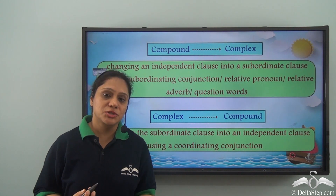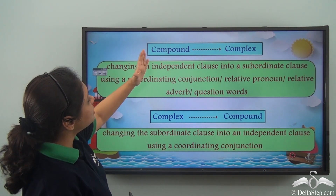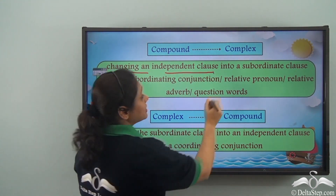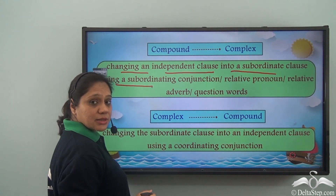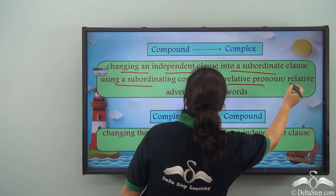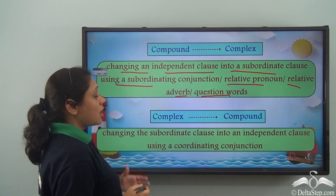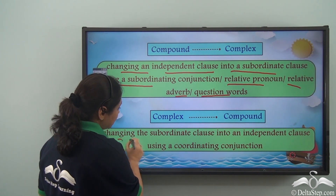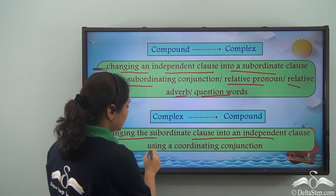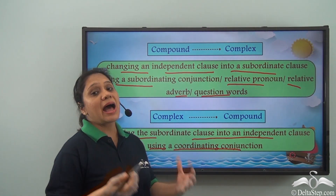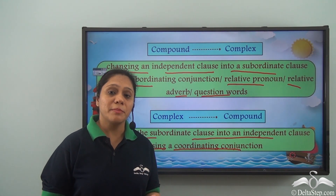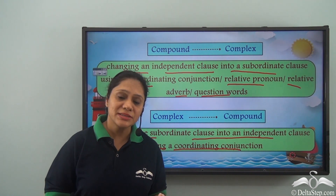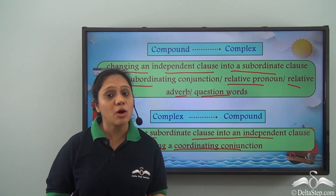To summarize: we can change compound sentences to complex sentences by changing an independent clause into a subordinate clause using a subordinating conjunction, relative pronoun, relative adverb, or question word. We can also change a complex sentence into a compound sentence by changing the subordinate clause into an independent clause using a coordinating conjunction. Remember that we cannot transform every sentence. The transformation of compound and complex sentences without changing meaning should now be easy to understand.